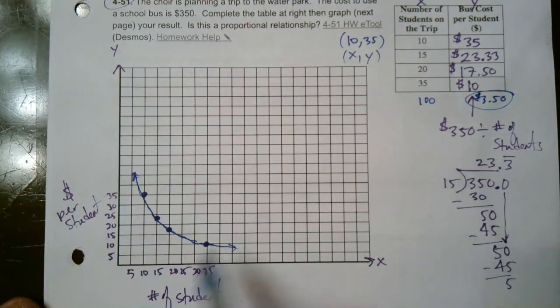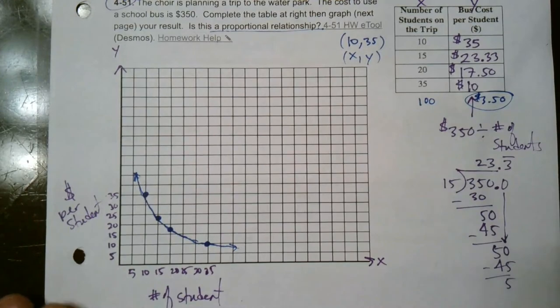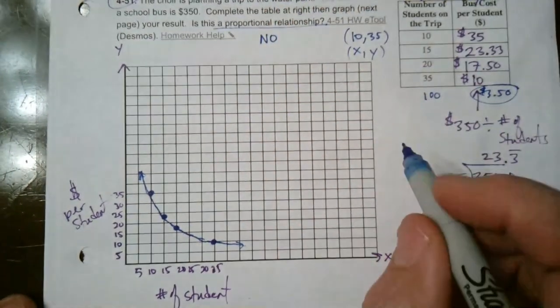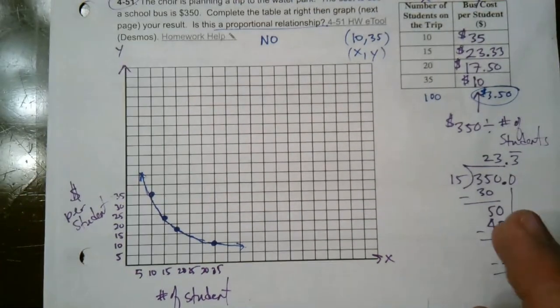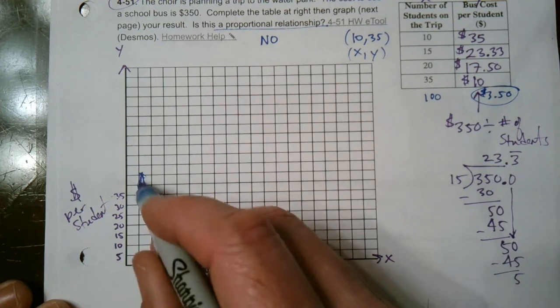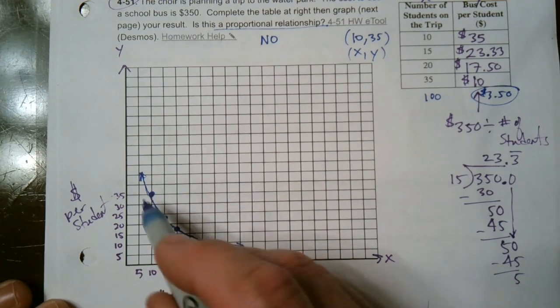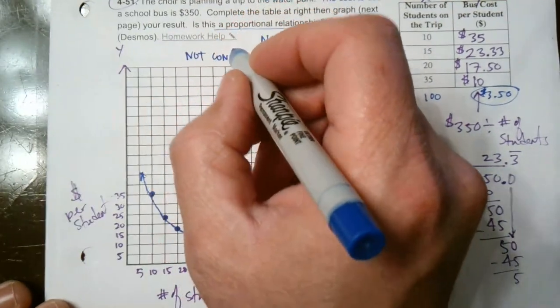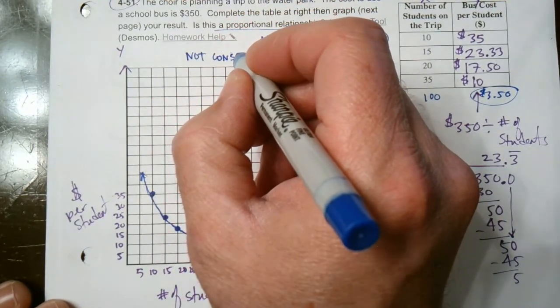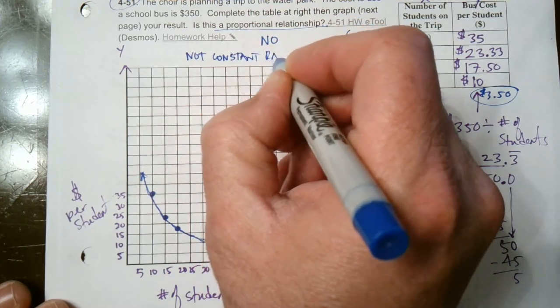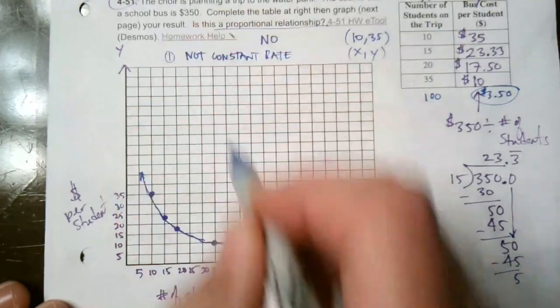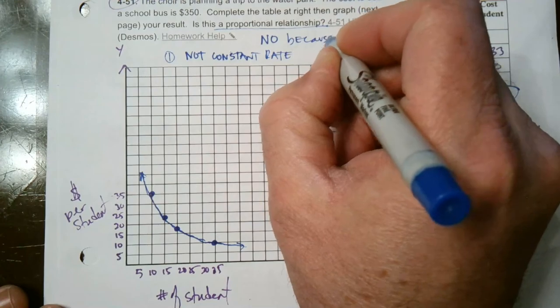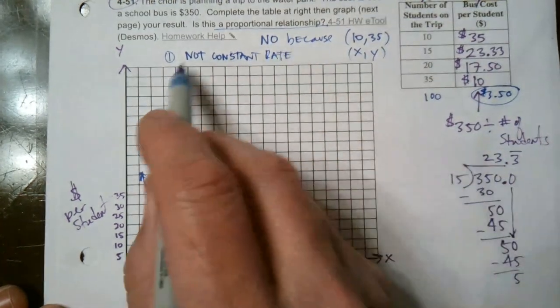So we've got this graph, and now it's asking, is this a proportional relationship? Well, this is where we hopefully know that, no, it's not. And why is it not? Well, because remember, there's two things that it has to be proportional. One, it has to be a constant rate. It has to be a line when you connect the dots, and that is not a line. That's a curve. So it's not constant. So I'm going to write, why not? Why not constant rate? That's one reason. So no, because not constant rate.